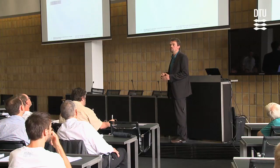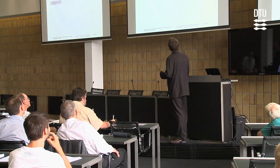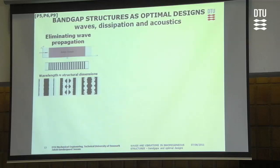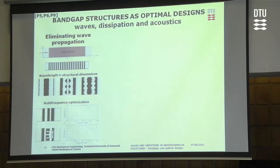Using this formulation, we obtained structures for eliminating wave propagation. With a long design domain, we get band gap or very periodic-like structures. Moving to structural dimensions on the order of magnitude of the wavelength, we could no longer create periodic structures but got more intricate ones — for compression waves, shear waves, and combinations. This was also extended to multi-frequency optimization over a range of frequencies.